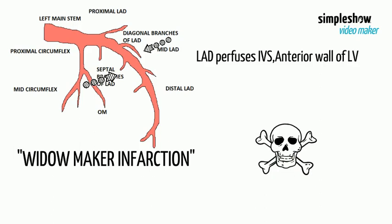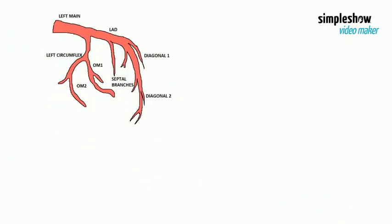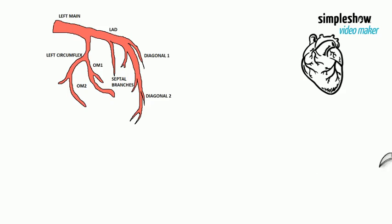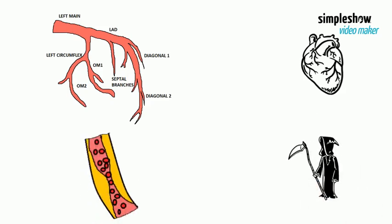The term widowmaker infarction is used because the left main coronary or the left anterior descending supply blood to large areas of the heart. This means that if these arteries are abruptly and completely occluded, it will cause a massive heart attack that will likely lead to sudden death.